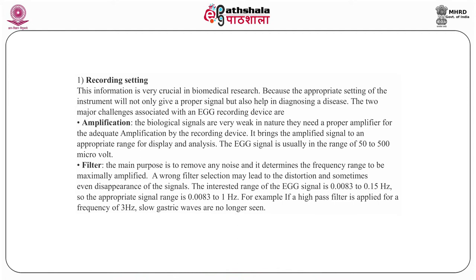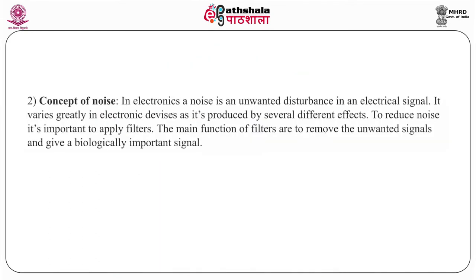The appropriate signal recording range is 0.0083 to 1 Hz. For example, if a high-pass filter is applied at a frequency of 3 Hz, slow gastric waves are no longer seen. In electronics, noise is an unwanted disturbance in any electrical signal. It varies greatly in electronic devices as it is produced by several different effects. To reduce noise, it is important to apply filters, whose main functions are to remove the unwanted signal and retain only the biologically important signal.